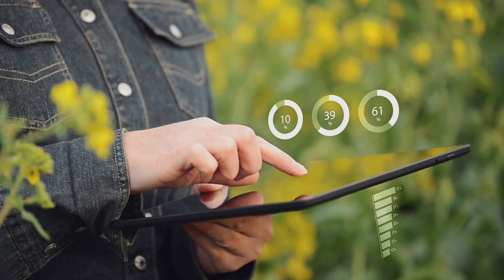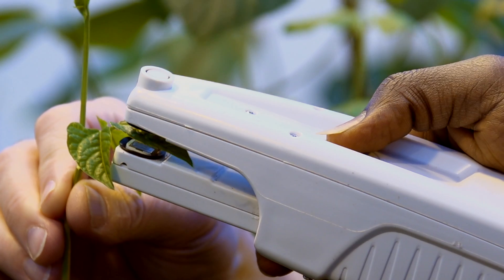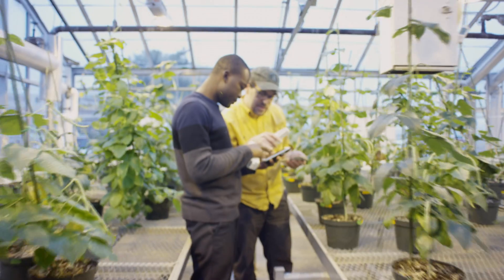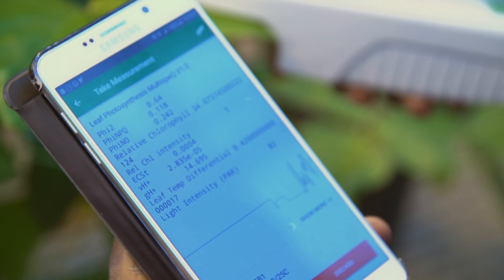We invented a hand-held gadget that can clamp on a leaf to learn almost instantly how a plant is working. Data from the device is immediately transmitted to an online platform where analytical tools can identify which genes make the plant perform better.